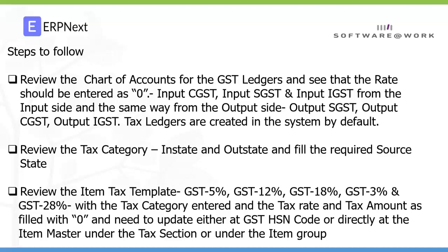These are the steps we need to follow to do the GST setup. First, we need to review the chart of accounts for the tax ledger — that is the GST ledgers — and see that the rate should be entered as zero. This applies to the input side: input CGST, input SGST, and input IGST, as well as the output side: output CGST, output SGST, and output IGST.